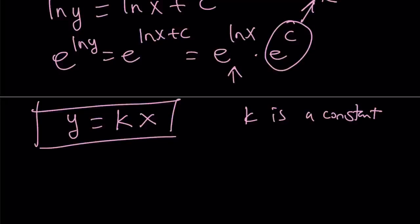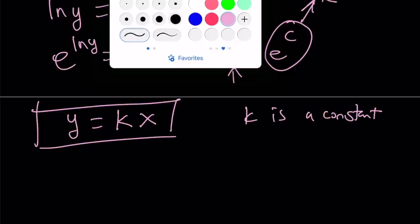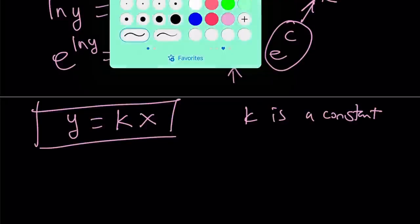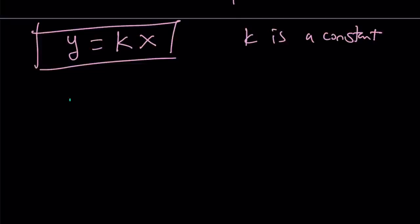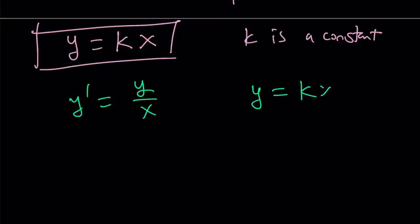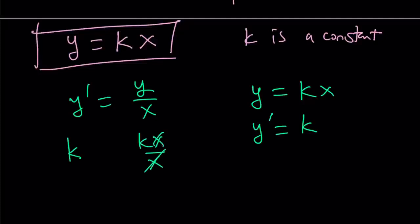This brings us to the end of the third method, but we're also going to check our work. Our original problem was y prime equals y over x, and we got y equals kx. Let's verify: if y equals kx, then y prime equals k. And y over x equals kx over x, which also equals k. So k equals k — everybody is happy, everything checks out.